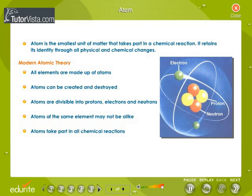According to Modern Atomic Theory, all elements are made up of atoms. Atoms can be created and destroyed. Atoms are divisible into protons, electrons and neutrons. Atoms of the same element may not be alike. Atoms take part in all chemical reactions.